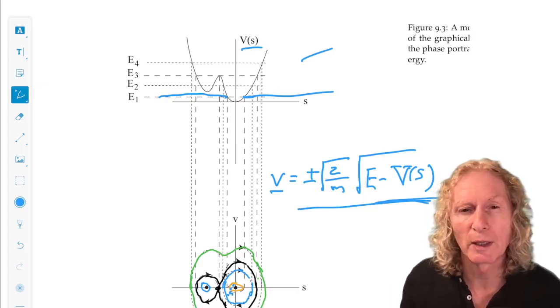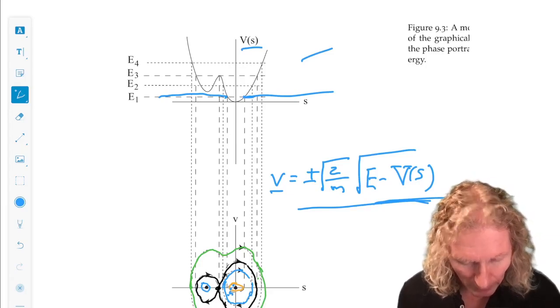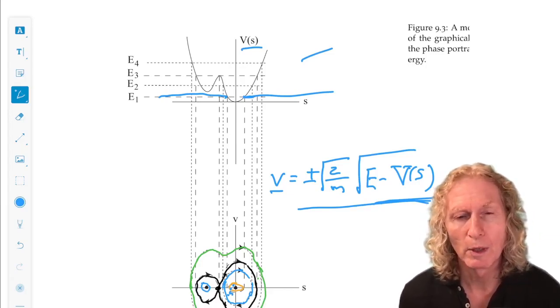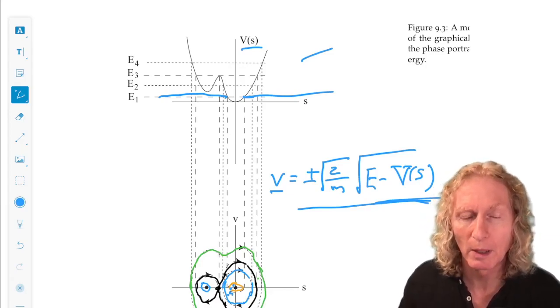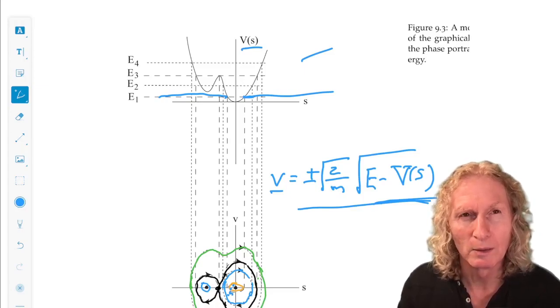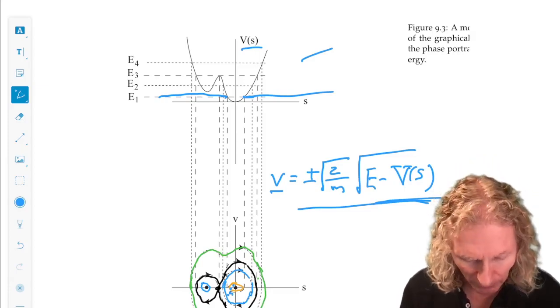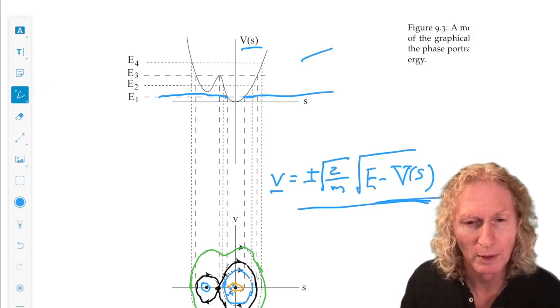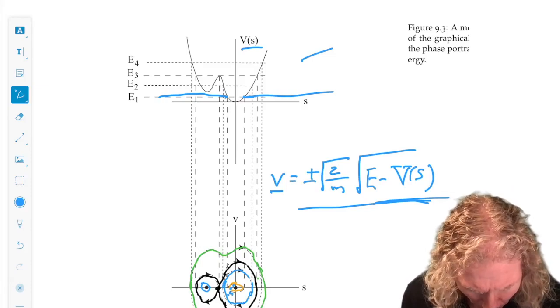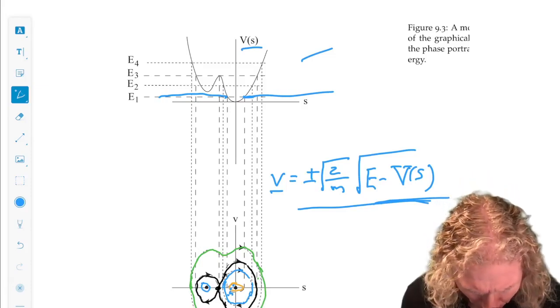And remember the directionality I've chosen for the motion. V positive, S dot is positive, V negative, S dot is negative, and then we circulate it in a clockwise sense. So we get a periodic motion, a closed curve inside.